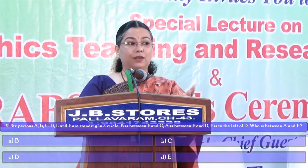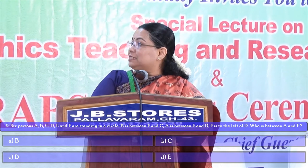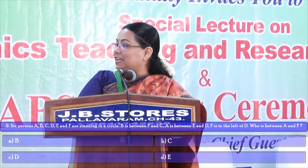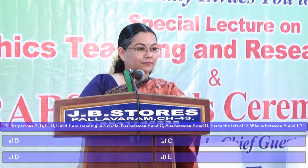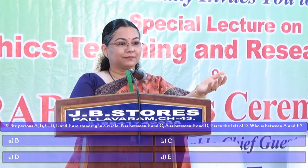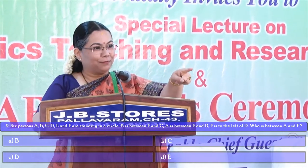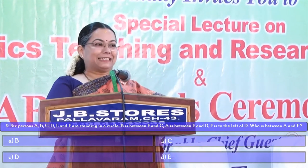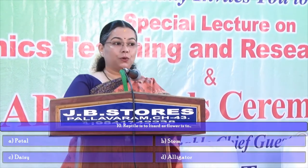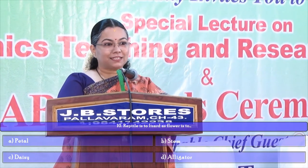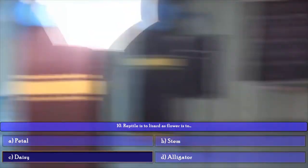Six persons A, B, C, D, E, and F are standing in a circle. B is between F and C. A is between E and D. F is to the left of D. Who is between A and F? The answer is E — you have to raise your hands to get the chocolate! Next question: reptile is to lizard as flower is to? The answer is Daisy — daisy is a type of flower just as lizard is a type of reptile.